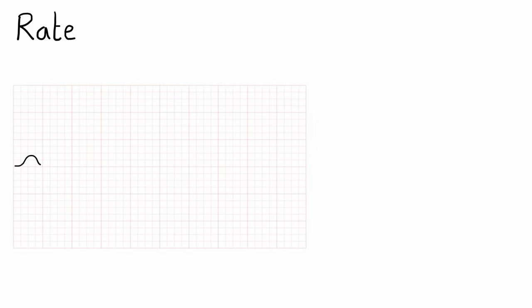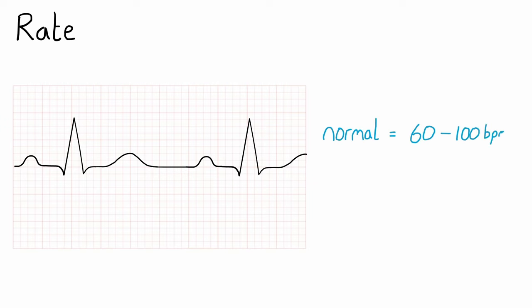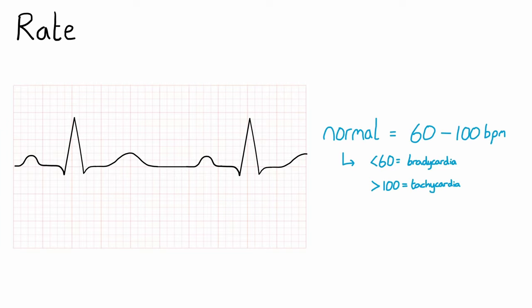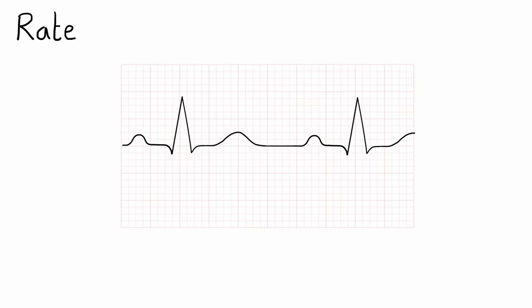First is calculating the heart rate. A normal adult heart beats at 60 to 100 beats per minute, with bradycardia meaning slower than this and tachycardia being faster. There are two methods to calculating the rate. The first way is to use the equation 300 divided by the number of large squares in the RR interval.